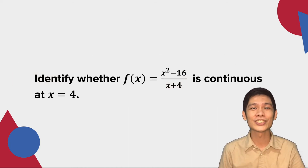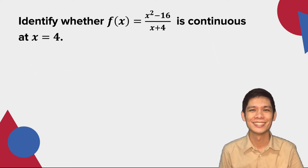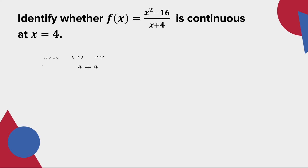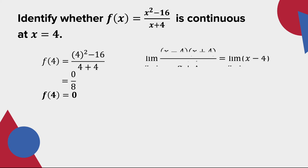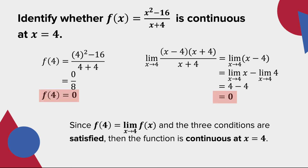Let us identify if the function (x squared minus 16) over (x plus 4) is continuous at x is equal to 4. Evaluating the function at x is equal to 4, we have f(4) which is equal to 0. The limit of the given function as x approaches 4 is equal to 0. Since the limit of the function is equal to the value of f(4) and the three conditions are satisfied, then the function is continuous at x is equal to 4.